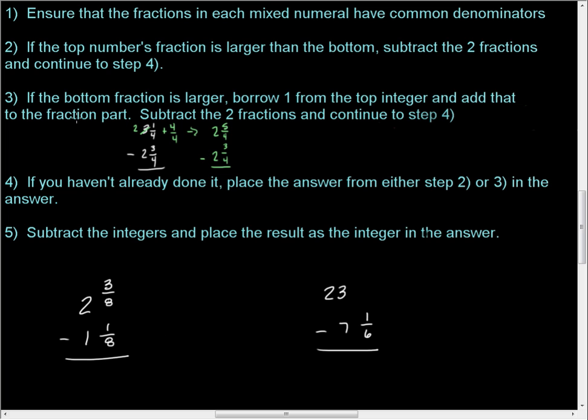But, in this first example, we ensure that the fractions have a common denominator, and they do. They both have eights. It says, number two, if the top number's fraction is larger than the bottom, and once they have common denominators, then you can check that. Subtract the two fractions and continue to step four.